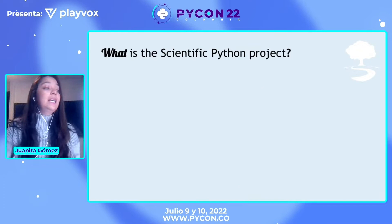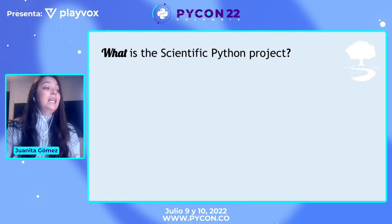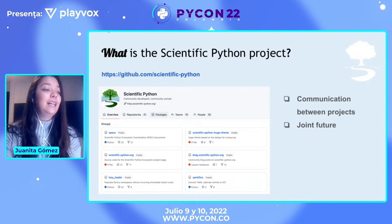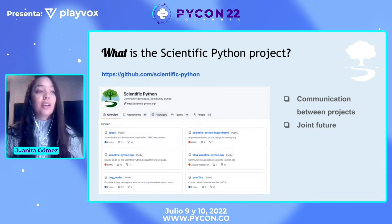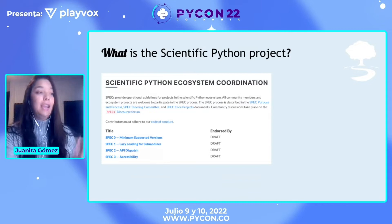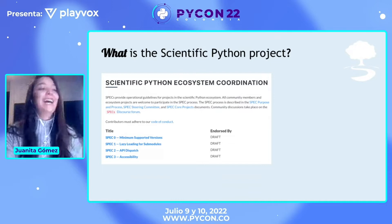So basically, what is the Scientific Python project? It's an initiative to improve communication between projects in the ecosystem — basically get them talking to each other in order to plan strategies for the future and make that future a reality. I'm going to talk very quickly about the SPECs, which is basically the first aim of the Scientific Python project, but this is not what my talk is going to be focused on.